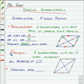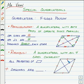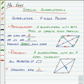Next, we have a rhombus. A rhombus is a quadrilateral with all four sides congruent to each other. This rhombus has all the properties of the parallelogram, plus it's got diagonals that are going to be perpendicular to each other. So we can draw in some right angles here, and we've got the properties for a rhombus.